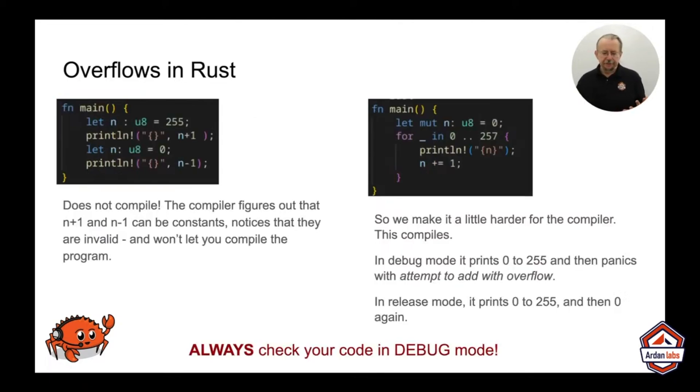So let's give that a go in Rust. Rust gets halfway here. So let n u8, so a u8 just like the others, 255, print n plus 1. Well, this doesn't compile at all because the static analyzer has figured out that n plus 1 is going to be an invalid number. And so the compiler will actually refuse to compile it altogether. So we got a little tricky, throw in a loop. Now the static analyzer is not analyzing in enough detail because we want to compile today, not next week.